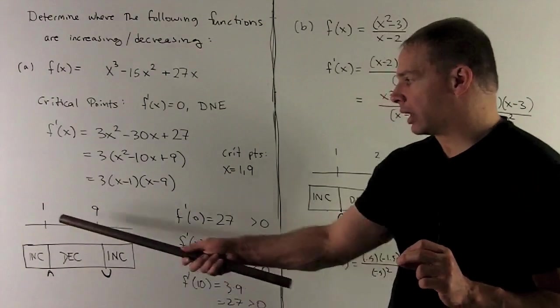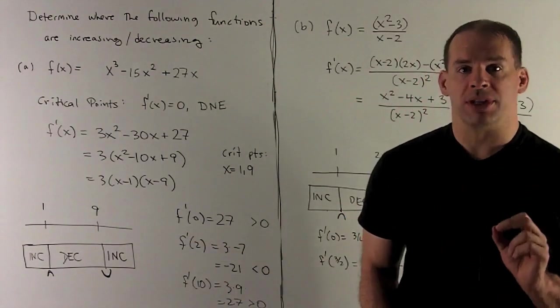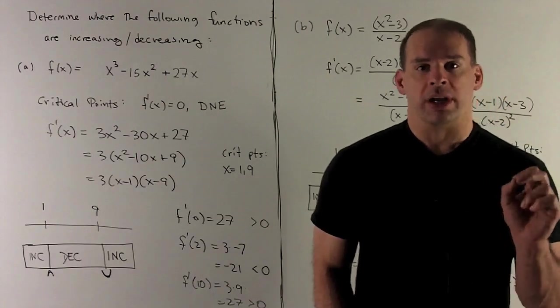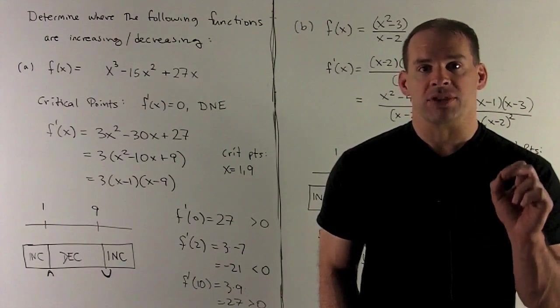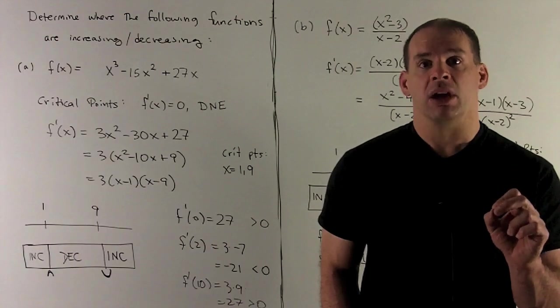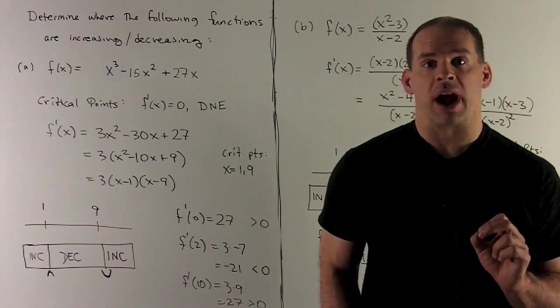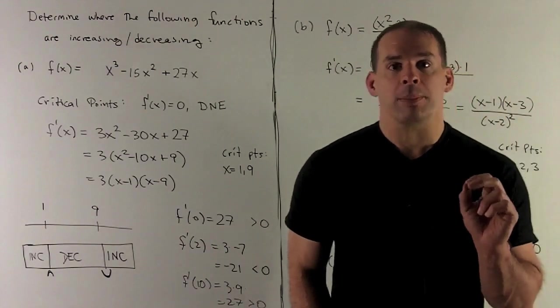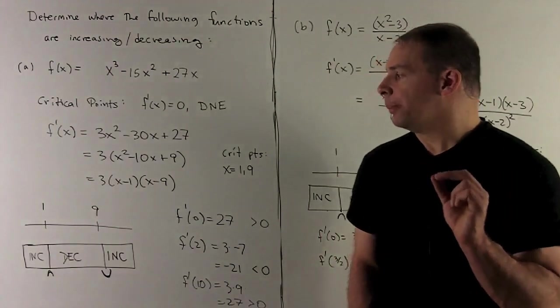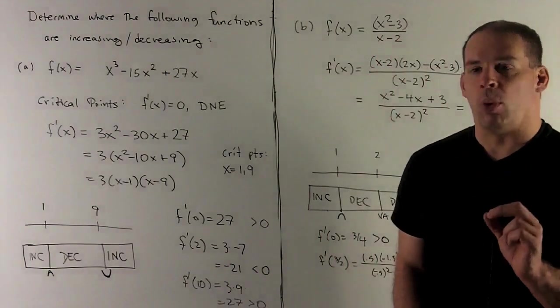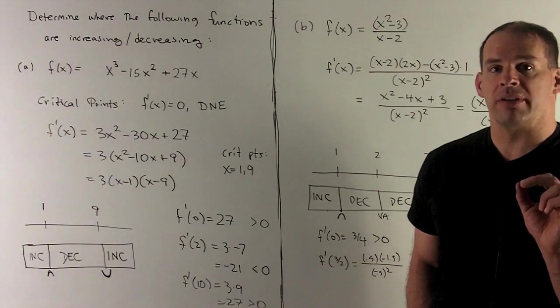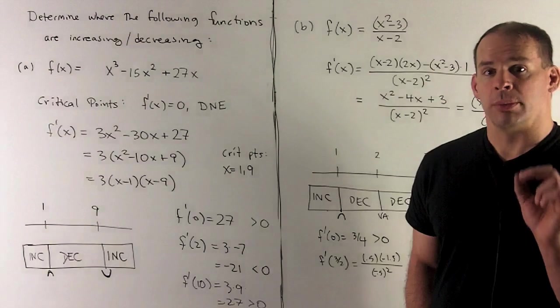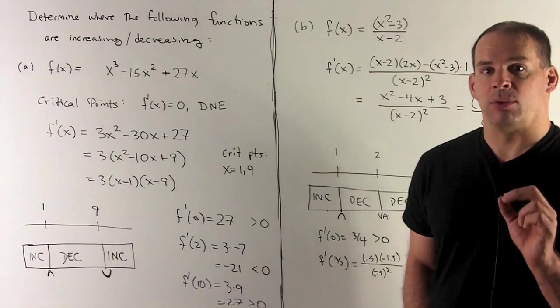So we're going to draw the real number line, and then we're going to mark off the points 1 and 9. 1 and 9 are going to be my critical points. In this case, since the derivative is equal to 0, they're going to represent horizontal tangent lines to the graph. Now, I need to check a point in each region. Well, on the far side of 1, I'm going to use 0. That's going to give me 27 for the derivative. That's positive. So I'm increasing on the left side of 1.